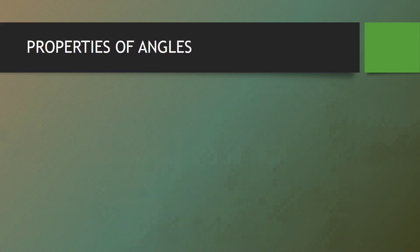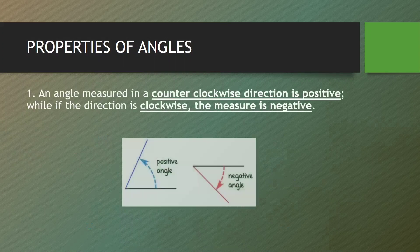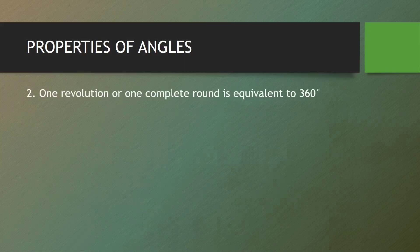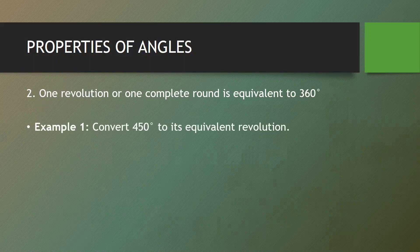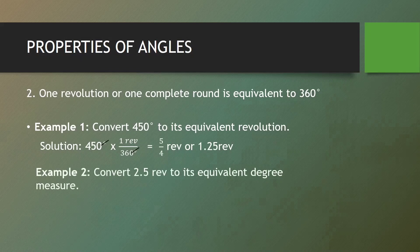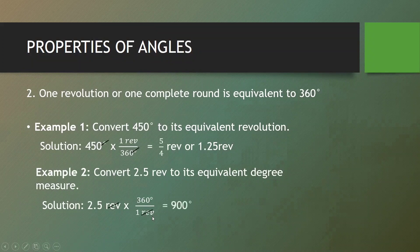Let's proceed with the two properties of angles. First property: an angle measured in a counterclockwise direction is positive, while if the direction is clockwise, the measure is negative. Second property: one revolution or one complete round is equal to 360 degrees. For example, to convert 450 degrees to its equivalent in revolutions, we multiply by one revolution over 360 degrees, which gives us 5/4 revolutions or 1.25 revolutions. To convert 2.5 revolutions to degrees, we multiply by 360 degrees over 1 revolution, giving us 900 degrees.